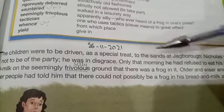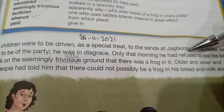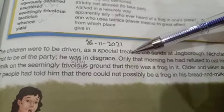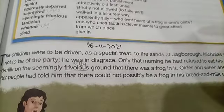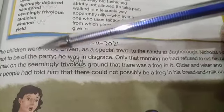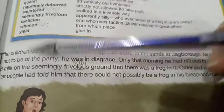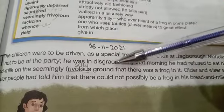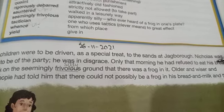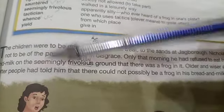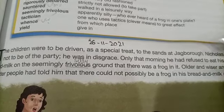Now we start reading. 'The children were to be driven as a special treat to the sands at Jake Brog.' Nicholas was not to be of the party — he was in disgrace. He had refused to eat his bread and milk on the seemingly flawless ground that there was a frog in it.